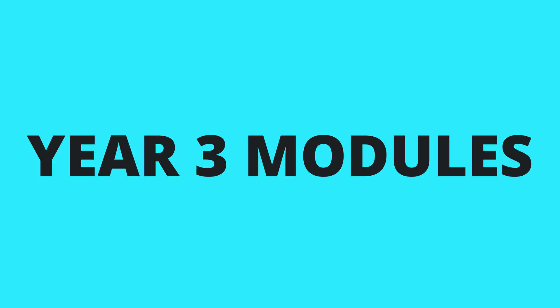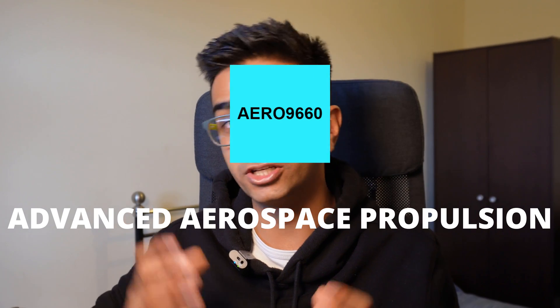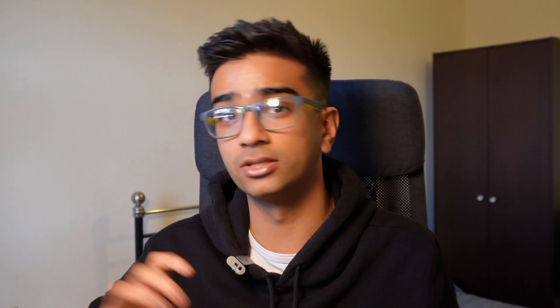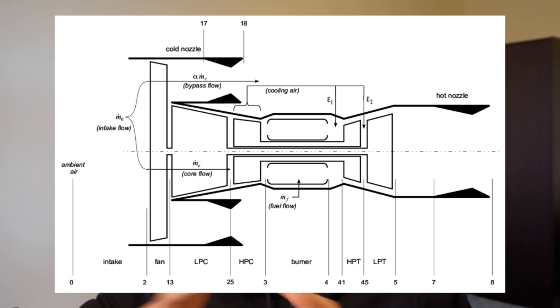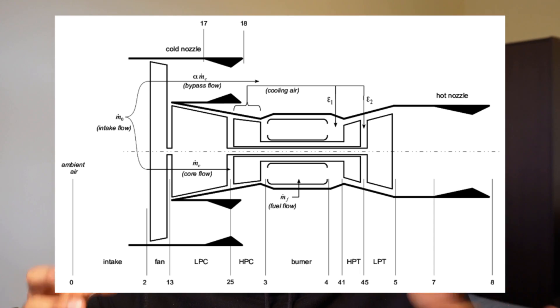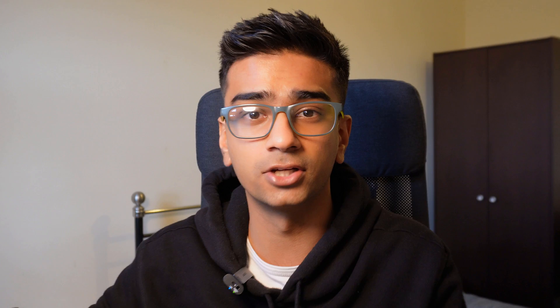Let's move on to third year — the module codes look a bit different because I did them on my study abroad year in Sydney. First up we have Aero9660, advanced aerospace propulsion, which covers things like spool analysis — for example, measuring pressure at different stages of a turbojet — and also rocketry. It was quite interesting and not too difficult, so definitely an S tier subject.